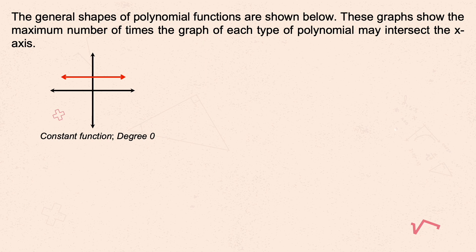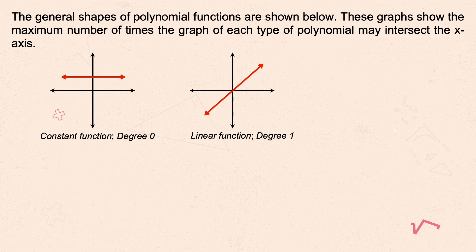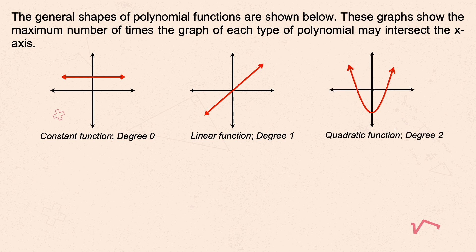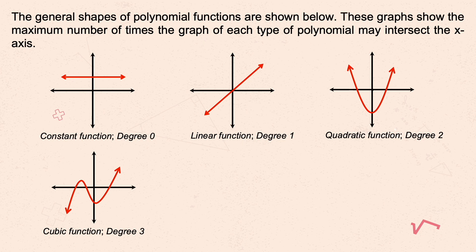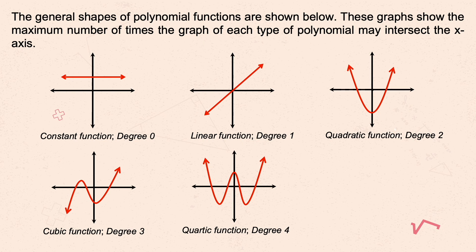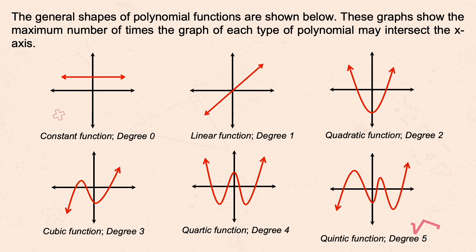For a linear function, the degree is one, meaning the graph would cross the x-axis only once. For a quadratic function, the graph is a parabola and normally intersects the x-axis twice. For a cubic function with a degree of three, the graph must intersect the x-axis three times. For a quartic function with degree four, the graph intersects the x-axis four times. For a quintic function or fifth-degree polynomial, the graph should intersect the x-axis five times.